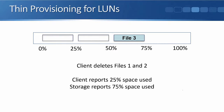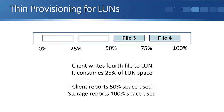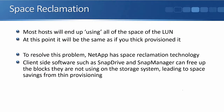This is where things get more complicated. The client deletes files 1 and 2, but it doesn't actually delete the blocks on the storage — it just marks them as available to be overwritten, so the storage system doesn't know. The client reports 25% space used, but the storage still reports 75% used. Then the client writes a fourth file at 25% of the LUN space. The client reports 50% used, but the storage now reports 100% used. Most hosts will end up using all of the LUN space like this, making it the same as if you had thick provisioned it — you won't get any space savings.